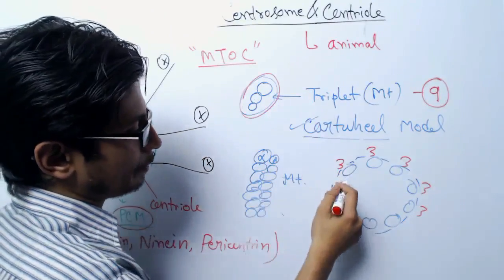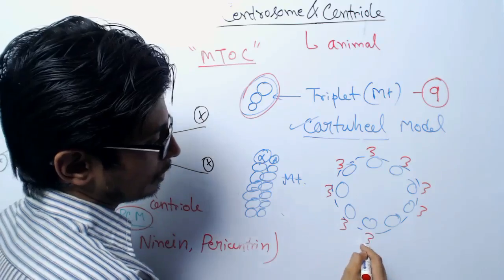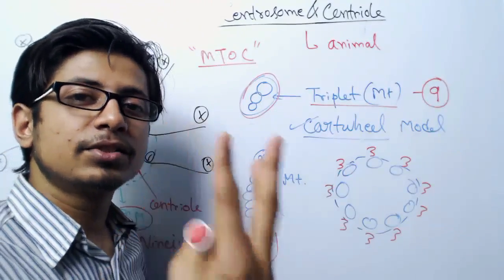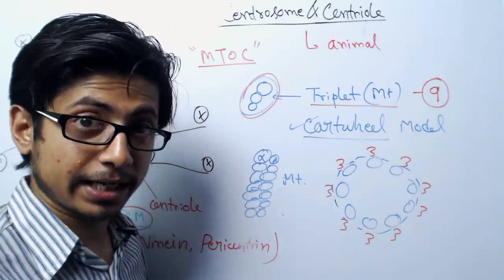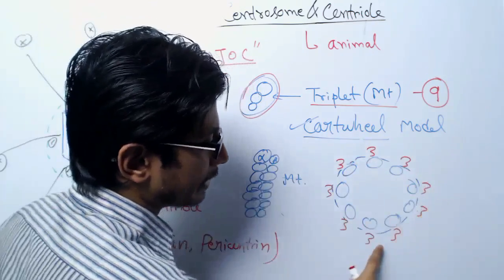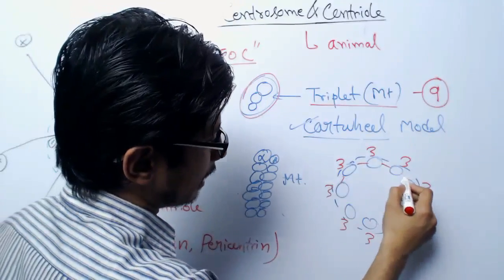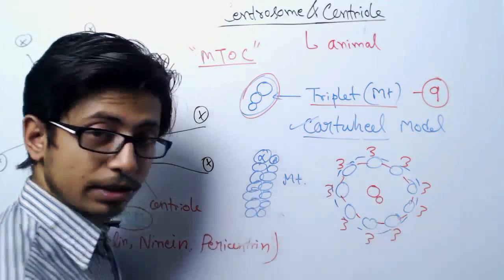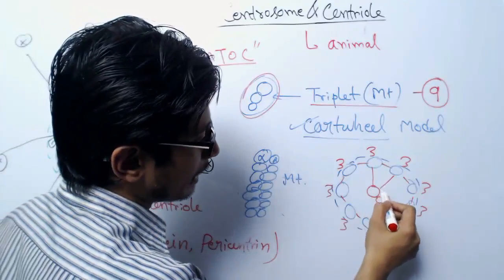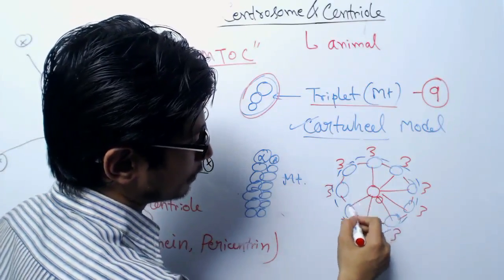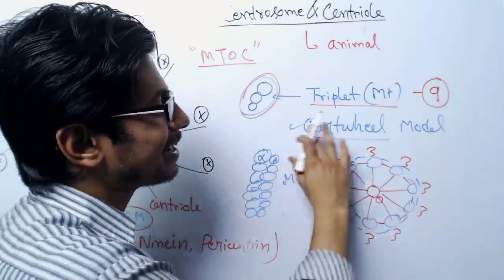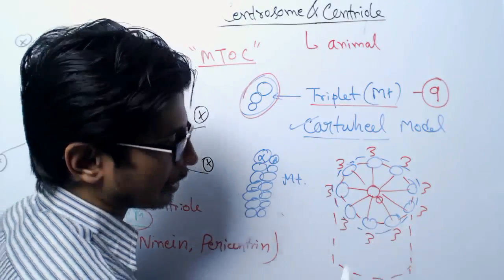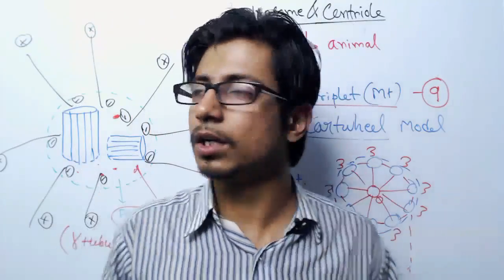Each triplet consists of three tubulin subunits attached with each other, forming a nine-microtubule-triplet arrangement. These triplets are held by interactions between them, and there is also a central pair — a duplet — connected to the triplets via protein spokes. This gives it a wheel-like appearance, known as the cartwheel model.